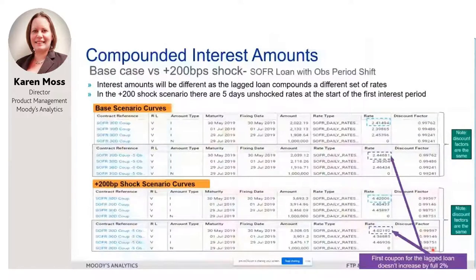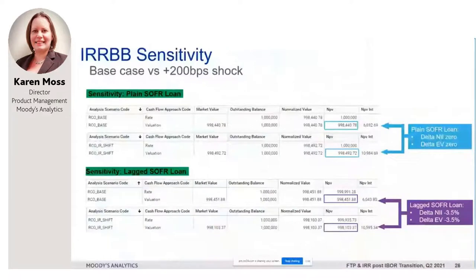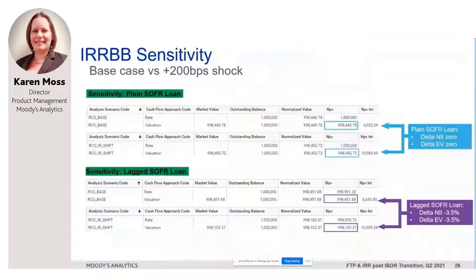Here are our sensitivity results. The plain SOFR loan's delta EV remains static because both coupons and discount factors increased by that full two percent. However, with the lag loan the delta EV drops because the discount factors have increased by two percent but the first coupon didn't. In a similar way, the NII will not move up as much as the shock, as the shock won't fully apply to the first coupon.